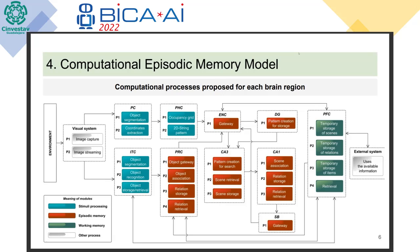The brain cortex also acts as a gateway — it helps send information from one area to another. Then we have the entorhinal cortex and subiculum, which are also gateways. These areas have other tasks for other memory systems like semantic and perirhinal cortex, but in this case they primarily help pass information from one area to another. Then we have the hippocampal areas, which help with encoding and the creation of scenes and the relationships between them.